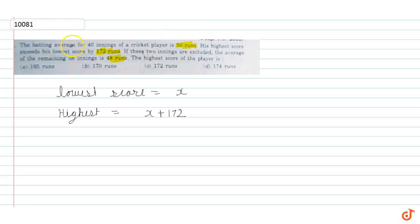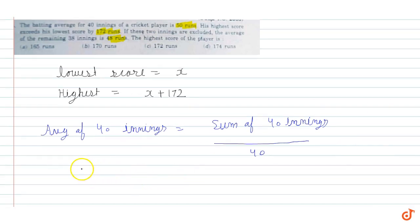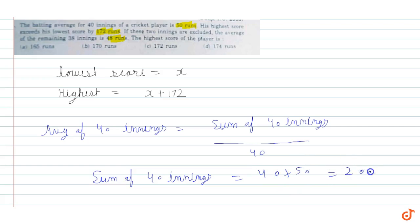The average of 40 innings is equal to the sum of 40 innings divided by 40. The given average is 50, so the sum of 40 innings is equal to average into 40, which is 40 into 50. So it is equal to 2000 runs. So in 40 innings, he scored 2000 runs.